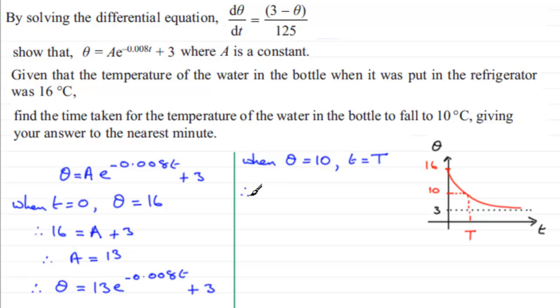And so therefore, we're going to have 10 equals 13e to the power minus 0.008T, and then you've got plus 3. Now, if I subtract 3 from both sides, that's going to give me 7 equals this term here. And if I divide by 13, I'm therefore going to have 7 over 13 equals e to the power minus 0.008T.